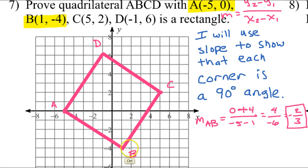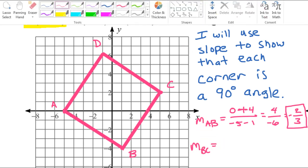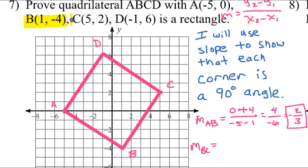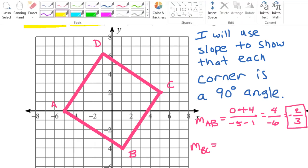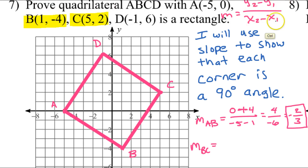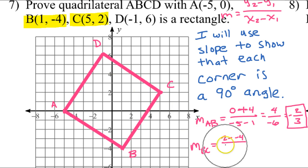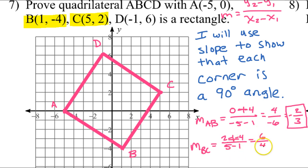Next let's find the slope of BC. I'm looking at points B(1, -4) and C(5, 2). Still doing Y minus Y over X minus X. So that's 2 minus negative 4 over 5 minus 1. Minus a negative is addition, so that gives me 6 over 4, which is 3 over 2.